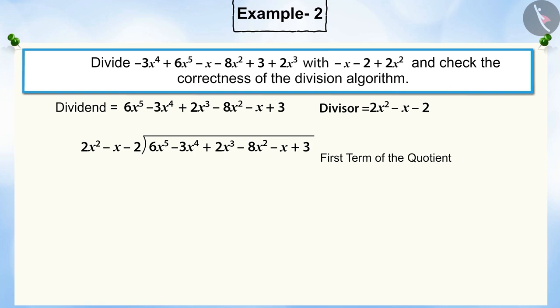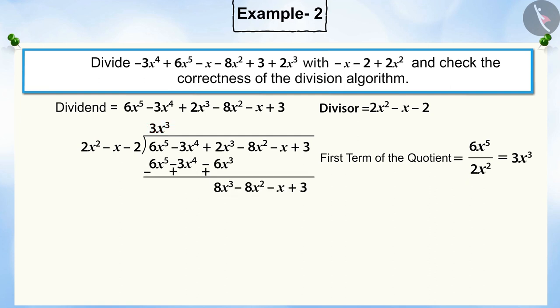To get the first term of the quotient, divide the highest degree term of the dividend by the highest degree term of the divisor. Now multiply the divisor by this quotient and write it below the dividend. After subtracting, the remainder we get is 8x cubed minus 8x squared minus x plus 3. This becomes the new dividend.